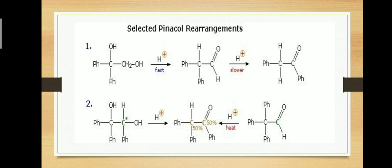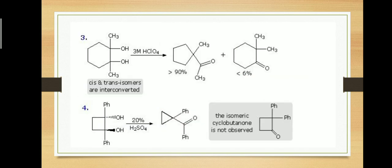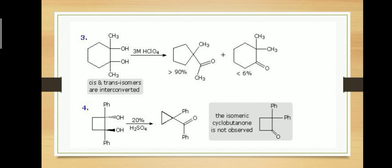These are some examples of the Pinacol-Pinacolone rearrangement. The major product formed is based on the stability of the intermediate carbocation. Here we have two products — one at 90% and another at about 6%. The difference arises because the cyclopentyl cation intermediate is more stable compared to the cyclohexane-based cation. Whichever intermediate carbocation is more stable determines the predominant product.